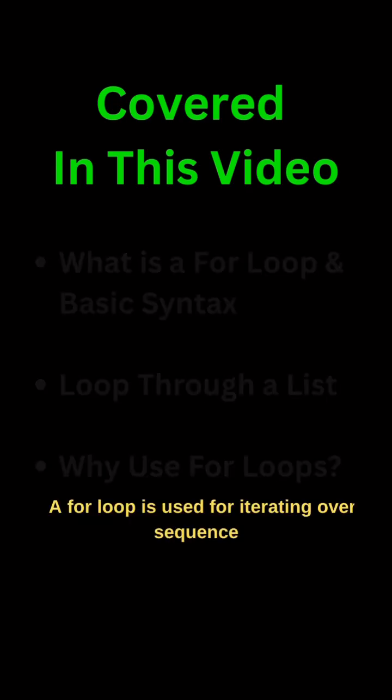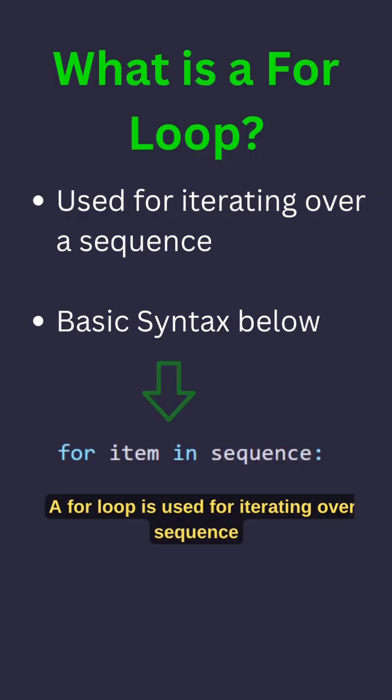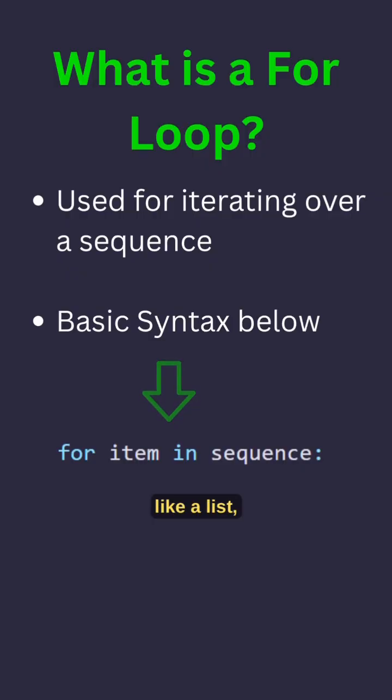A for loop is used for iterating over a sequence, like a list, tuple, string, or range.